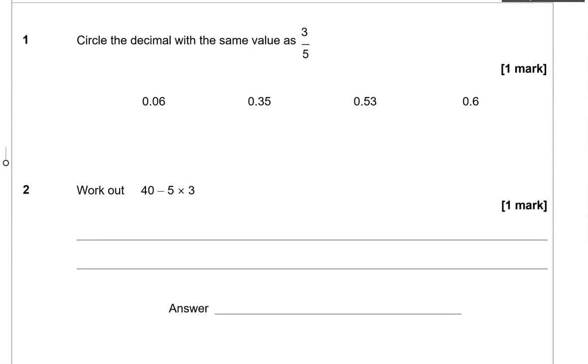Question 1. Circle the decimal with the same value as 3 fifths. So 3 fifths, if I represent it here using a bar, it will look like this. Starting with 0 ending with 1 would go 0.2 then 0.4, 0.6, 0.8, and then 1. 3 fifths was here so that is the same as 0.6.